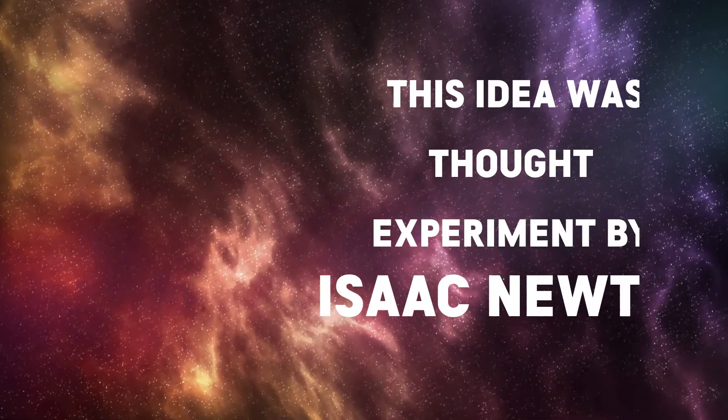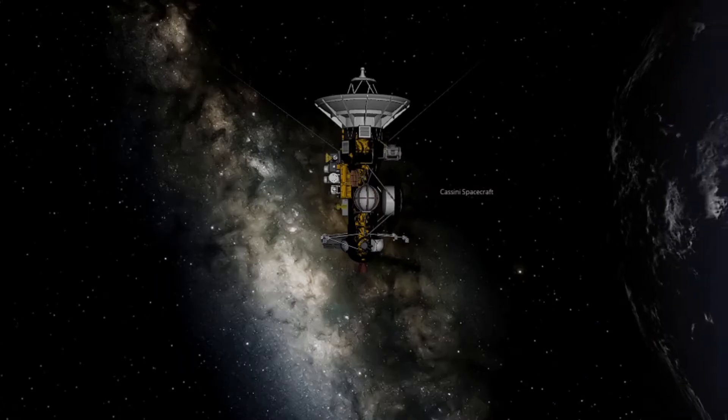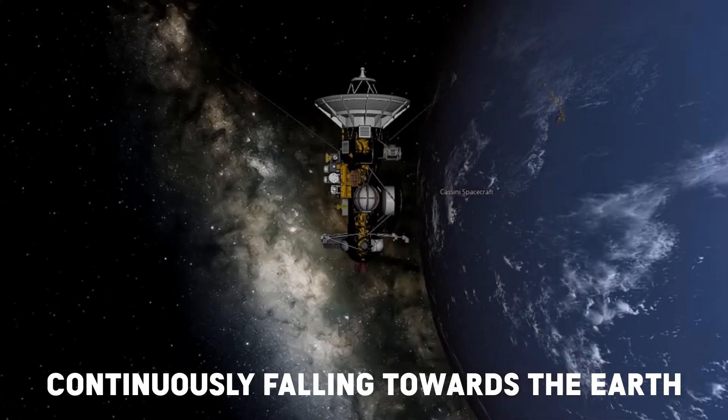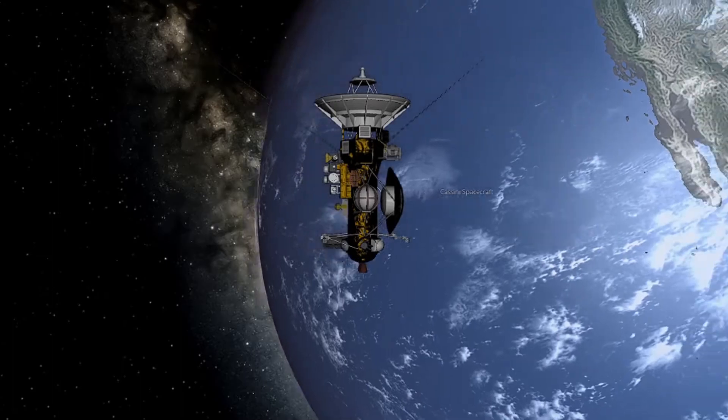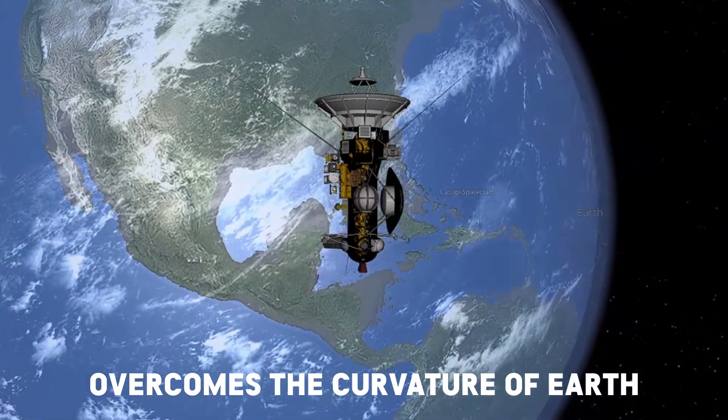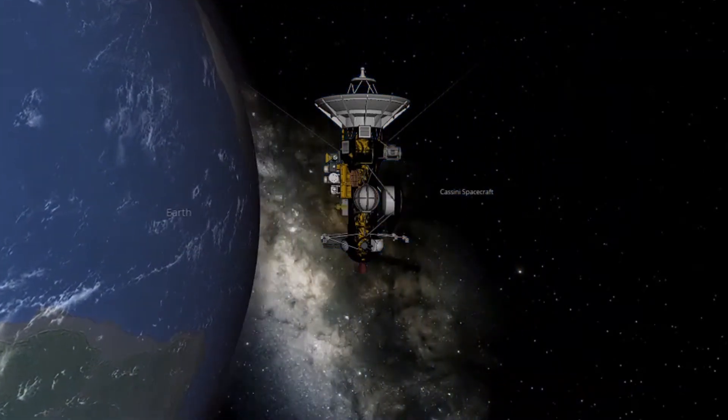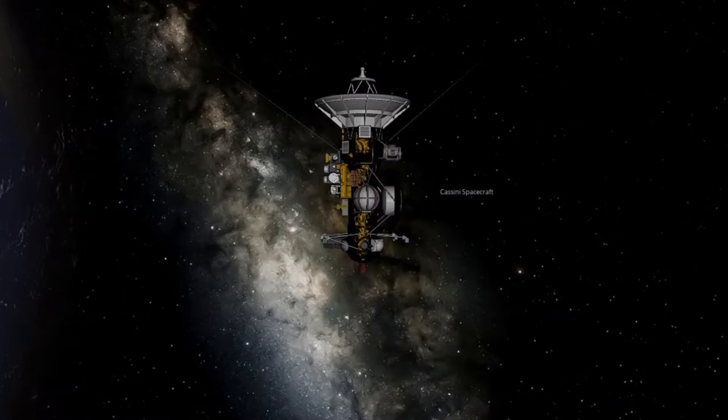This idea was a thought experiment done by Isaac Newton. The fun part is that they are continuously falling towards the Earth. But due to the huge speed of the satellite, it overcomes the curvature of Earth. So it's a free fall. Satellites are always in a free fall on the Earth.